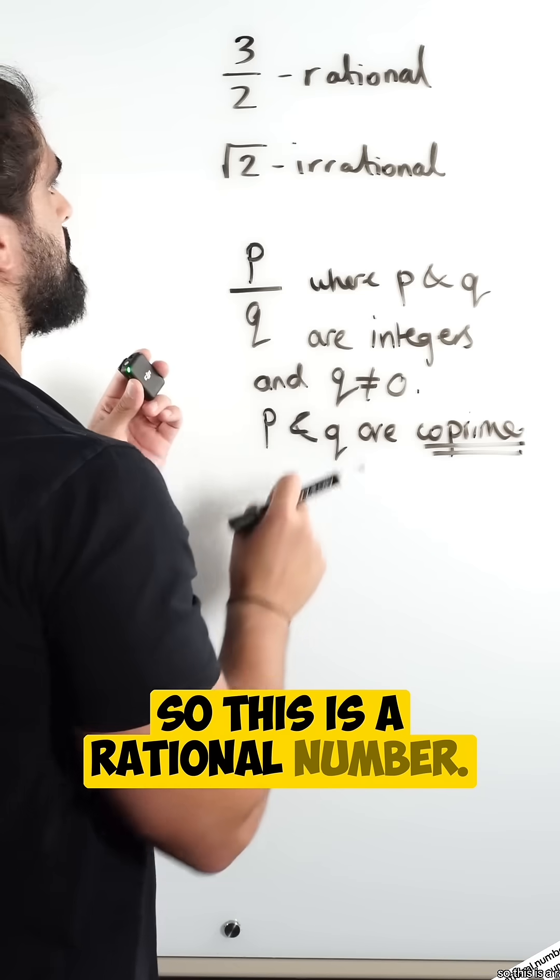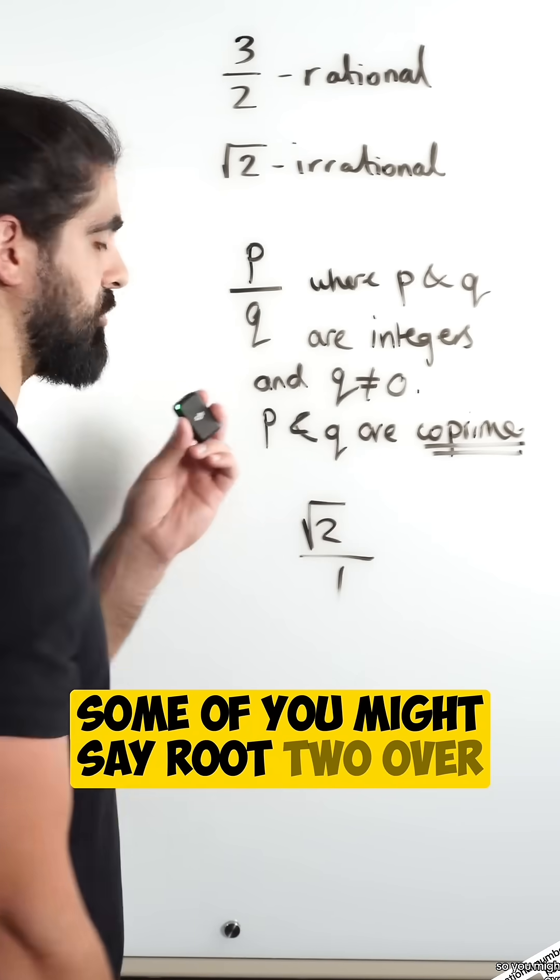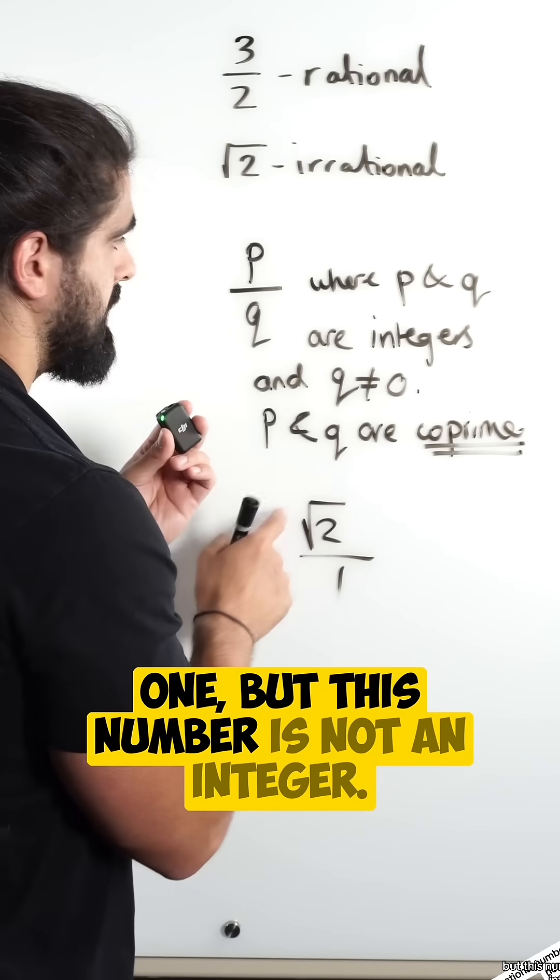So, this is a rational number. Root 2 is irrational because we can't write it as a fraction. Some of you might say root 2 over 1, but this number is not an integer.